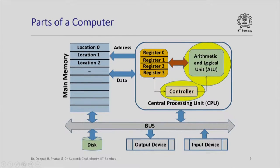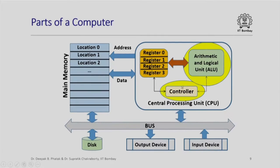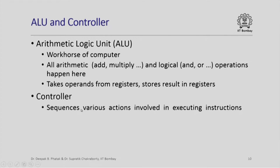Here I have highlighted two other parts of the computer: the arithmetic and logic unit and the controller, which are also parts of the central processing unit. The arithmetic logic unit is really the workhorse of the computer — all arithmetic operations like addition, multiplication, division, subtraction, and all logical operations like logical AND, OR, XOR, and complementing happen here. The ALU takes operands from registers and stores results back in registers. The controller has arrows going to the registers and the ALU; it is responsible for sequencing the various actions involved in executing instructions, playing a very central role in the functioning of a computer.